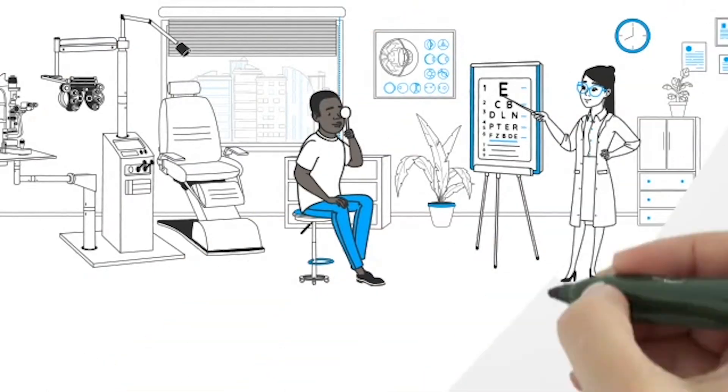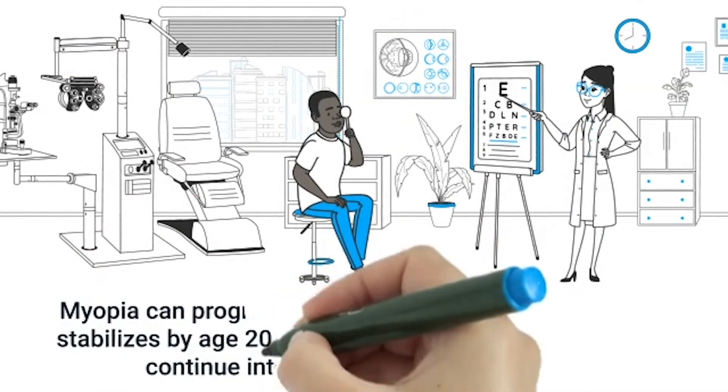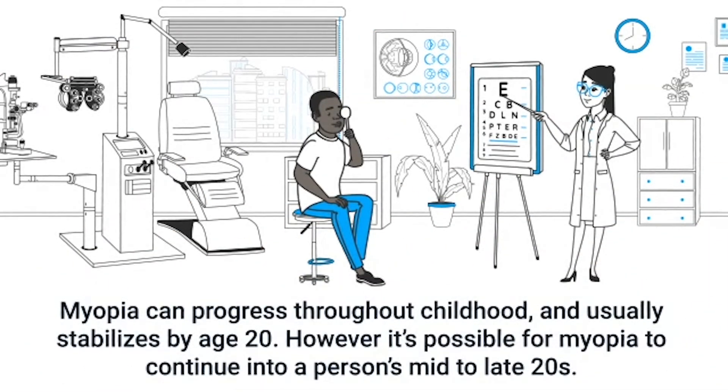Myopia can progress throughout childhood and usually stabilizes by age 20. However, it's possible for myopia to continue into a person's mid to late twenties.